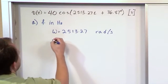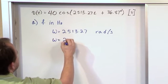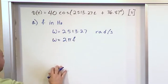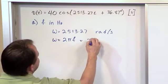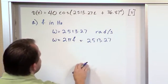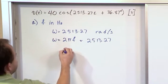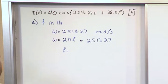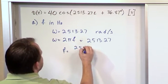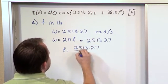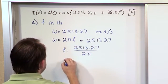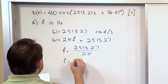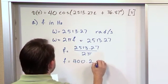So the number one thing I told you to remember is omega is 2π f, which we just said is 2513.27. So we can always solve for the frequency. F is just going to be equal to 2513.27 and then you just divide by 2π. And when you do that, you will get 400.2 hertz.